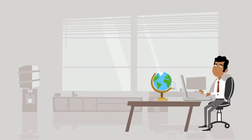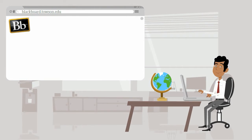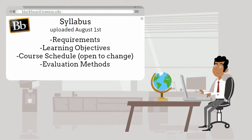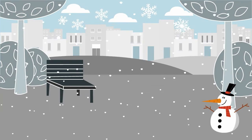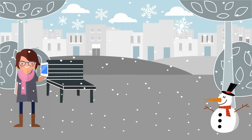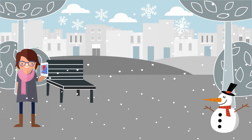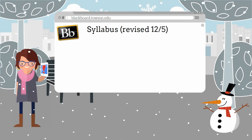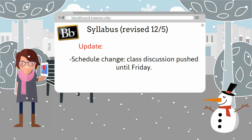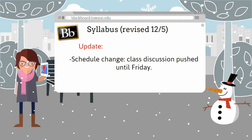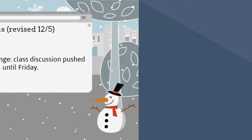This begins by uploading and maintaining an accurate and detailed syllabus before your course begins so students can know what to expect. For example, if one or two classes have to be canceled due to inclement weather, you can update the syllabus and corresponding schedule through Blackboard so your students can stay up to date.